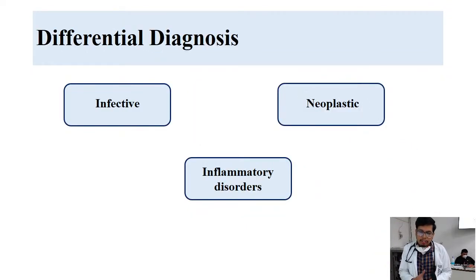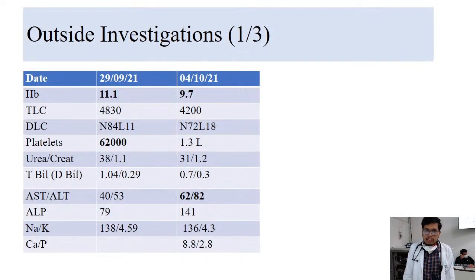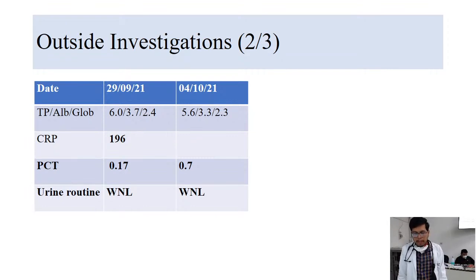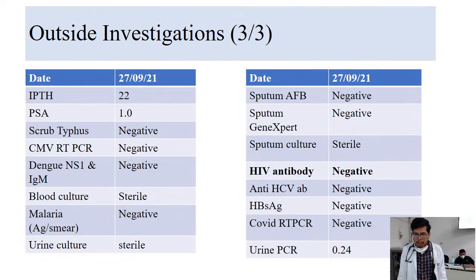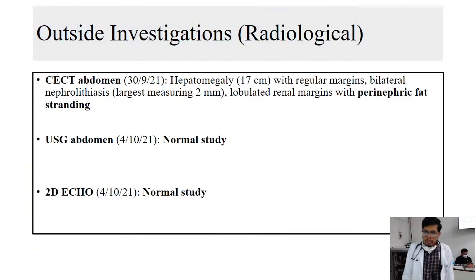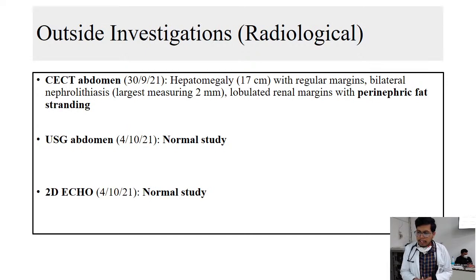Summarizing the case: fever of four weeks, nausea and vomiting for 10 days, significant weight loss and anorexia, with hepatomegaly as the only significant examination finding. Broad differentials included infective, neoplastic, or inflammatory disorders. Outside hospital routine investigations showed mild to moderate anemia, slightly elevated liver enzymes, elevated inflammatory markers including CRP, while urine routine and procalcitonin were normal. Special investigations — dengue, malaria, blood and urine culture, scrub typhus, CMV RT-PCR, HIV antibody, and other viral markers — were all negative.